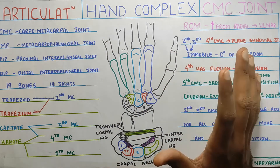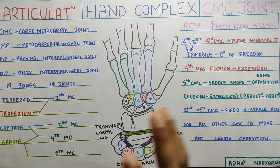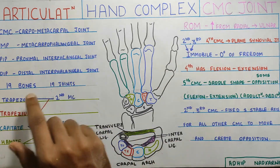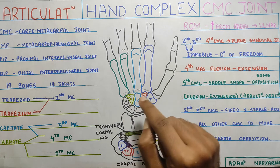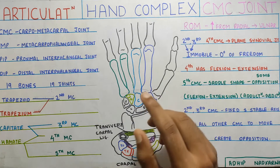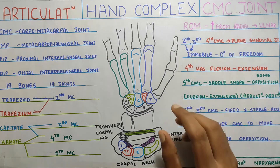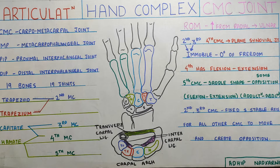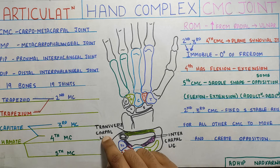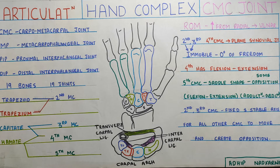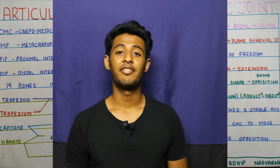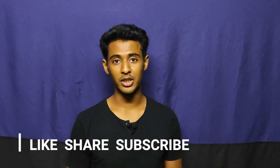That is all for this video. We saw the joints present in the hand, how many bones and joints are present, the articulation at the carpo-metacarpal joints, how range of motion improves from radial to ulnar, the axis of the carpo-metacarpal joint, and the carpal tunnel — formed by the transverse carpal ligament, carpal bones, and intercarpal ligaments. With that, we finish this topic. Thank you for watching. If you like the content, please like, share, and subscribe to the channel.